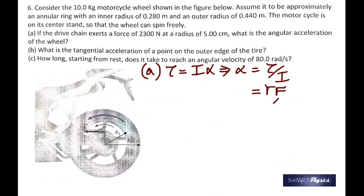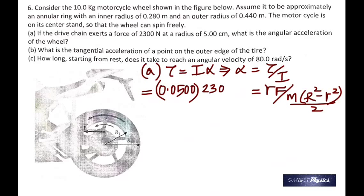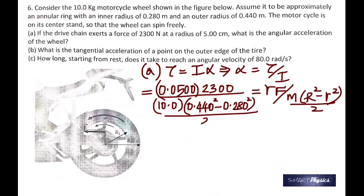And tau is RF. And for an annular ring, the moment of inertia is given by M times r^2 minus r^2 by 2. So when you do that, that's just radius and force. It's 10. You get 84.6 radians per second squared.